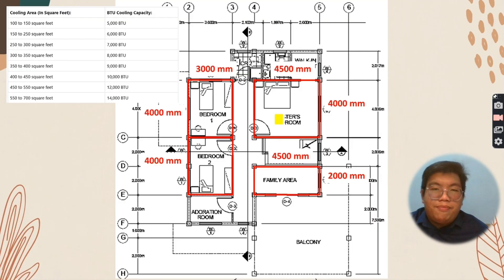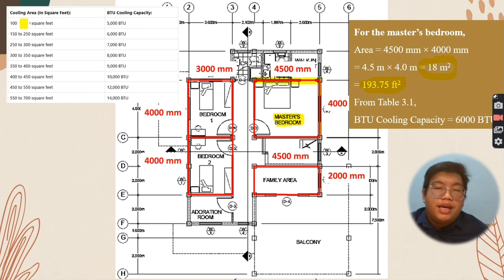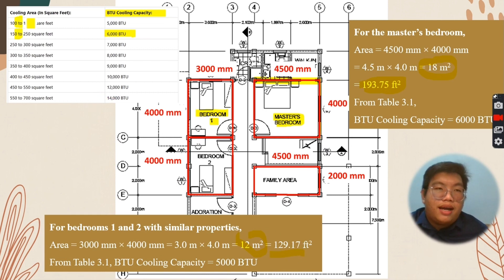For the master bedroom, the area is 4.5 meters by 4 meters, which is 18 square meters, converted to 193.75 square feet. Referring to table 3.1, that falls in the range of 150 to 250 square feet, so the BTU is 6,000. For bedroom 1 and bedroom 2, the area is 3 meters by 4 meters, which is 12 square meters or 129.17 square feet, falling in the range of 100 to 150 square feet, so the BTU is 5,000.